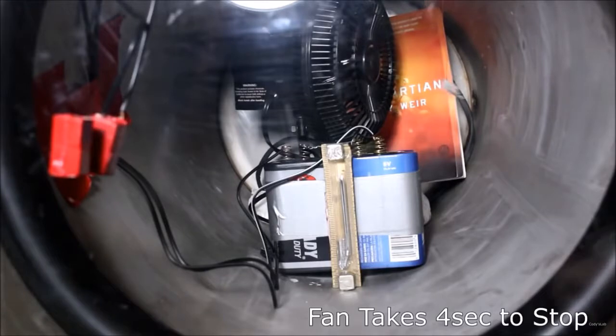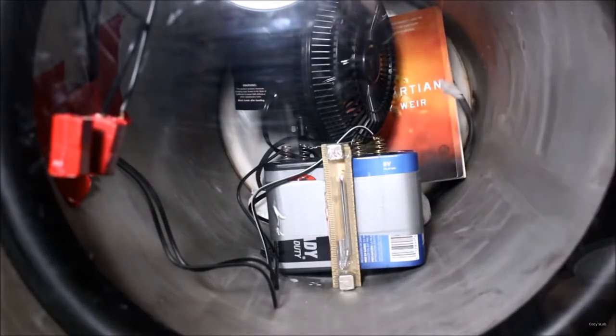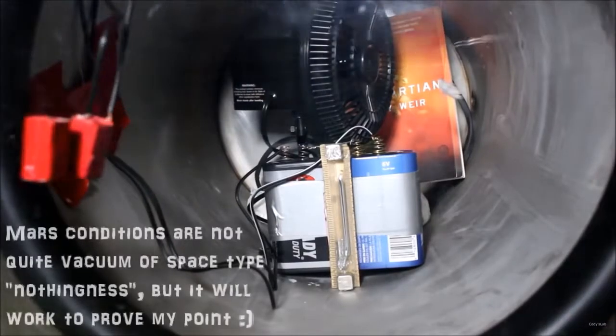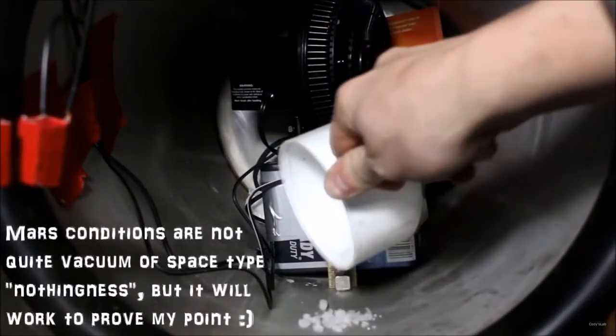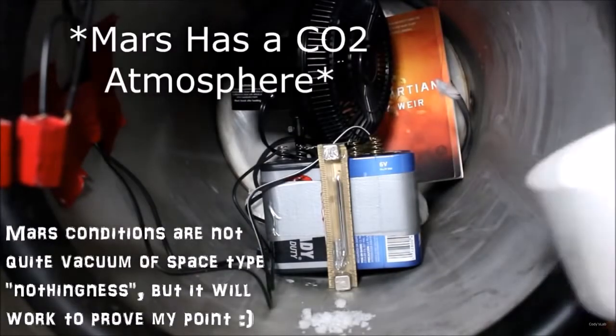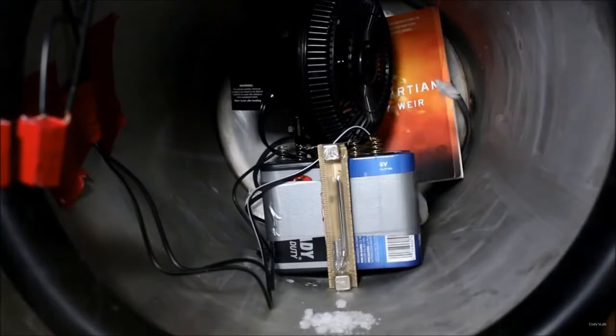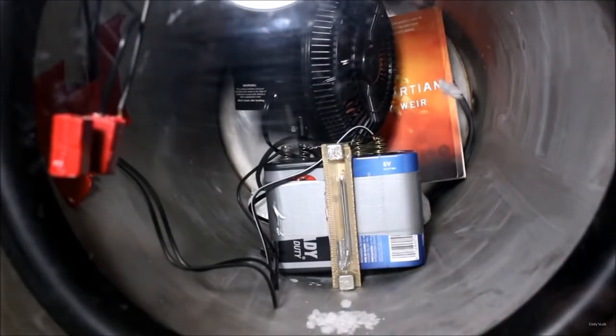So I want to take this down to Martian conditions. You might have noticed the Martian reference over there. First thing I'm going to do is add a little bit of dry ice to the chamber, just so that the atmosphere gets replaced with CO2. Many of you guys were complaining about that last time. So now I should have a CO2 atmosphere, or at least it'll create one.